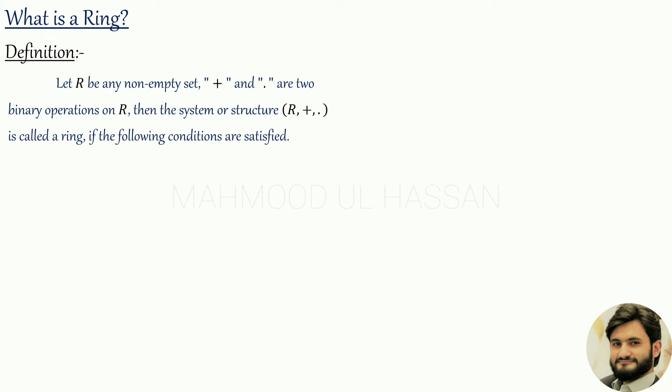Addition and multiplication are two binary operations defined on R. Then the structure R with binary operations of addition and multiplication is said to be a ring if the following conditions are satisfied. The first condition is that the set R under the binary operation of addition is an abelian group.